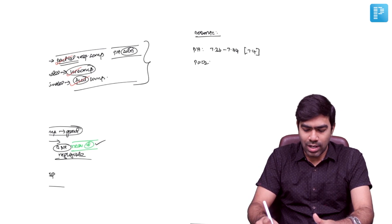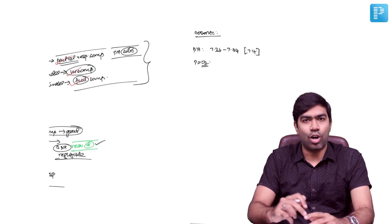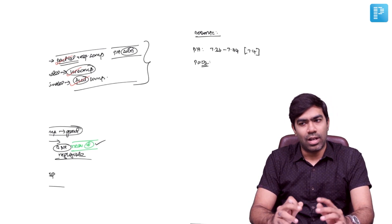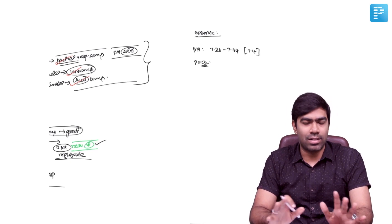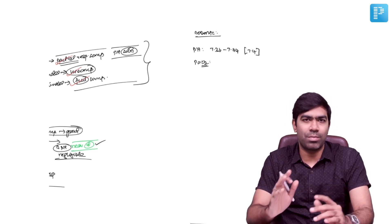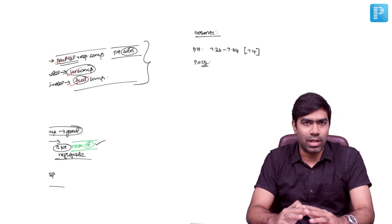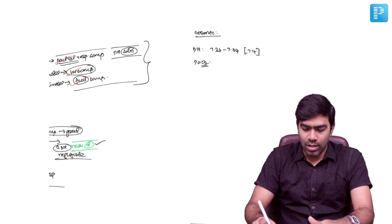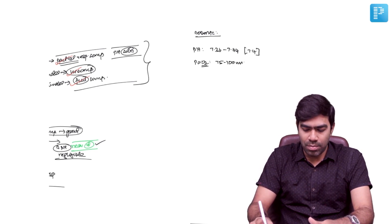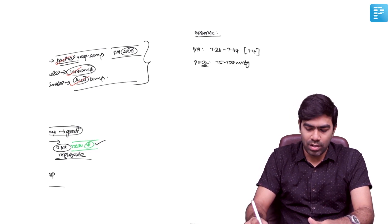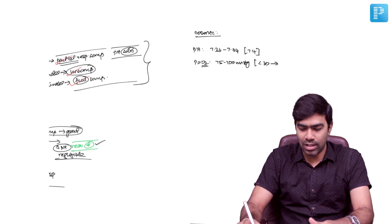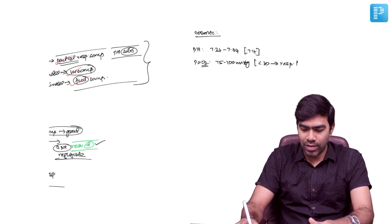Because you are seeing arterial blood gas, it is very important to see the oxygen. This is commonly done in practice, but in exams many students forget to see the PaO2. PaO2 normal is somewhere around 75 to 100 millimeters of mercury. But please understand, any PaO2 less than 60 can be defined as respiratory failure.